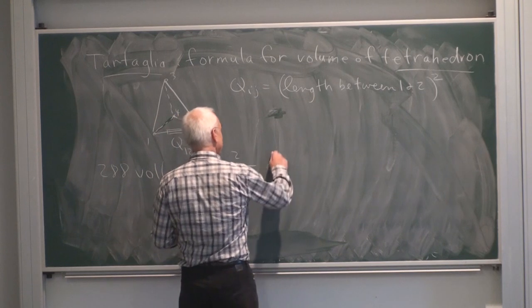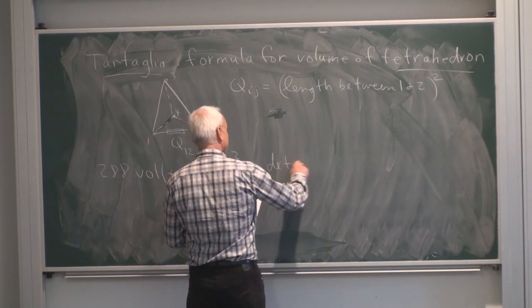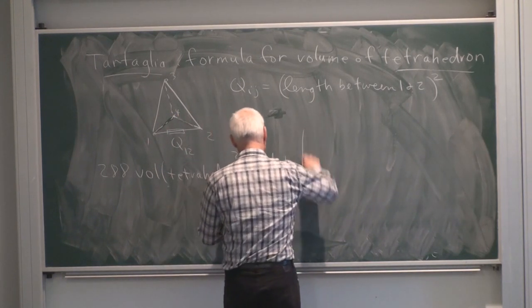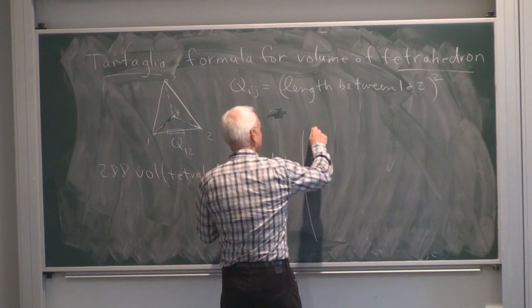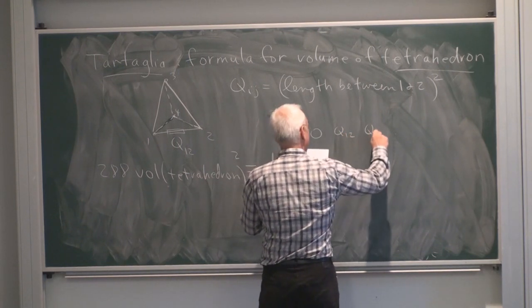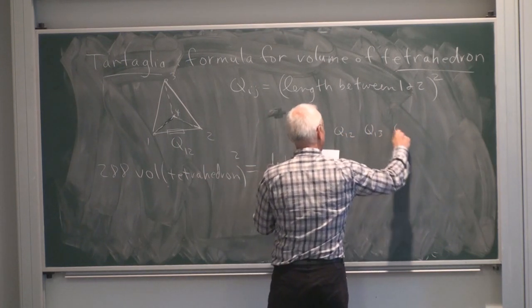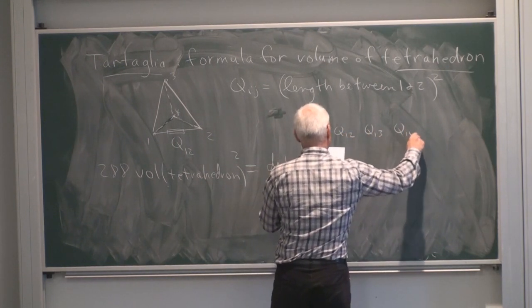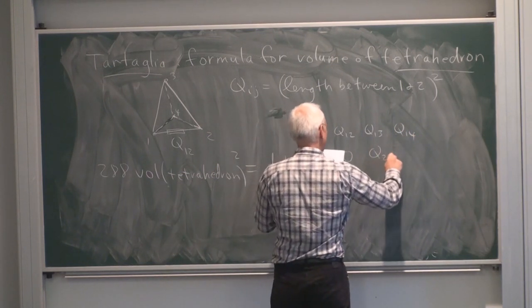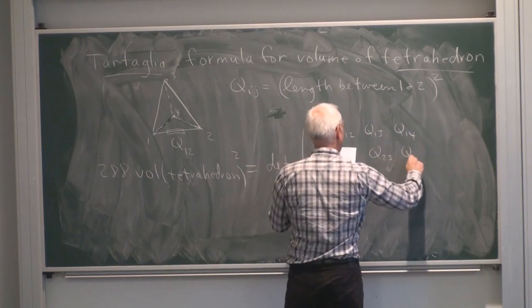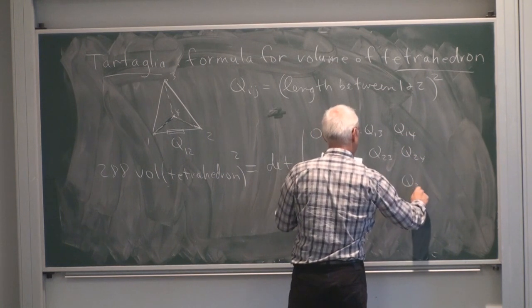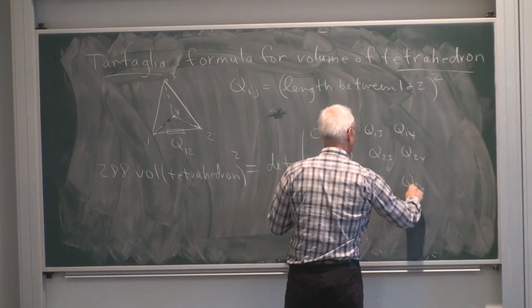The determinant of this matrix has entries: 0, Q₁₂, Q₁₃, Q₁₄; then 0, Q₂₃, Q₂₄; then 0, Q₃₄ — arranged along the upper part of the matrix.